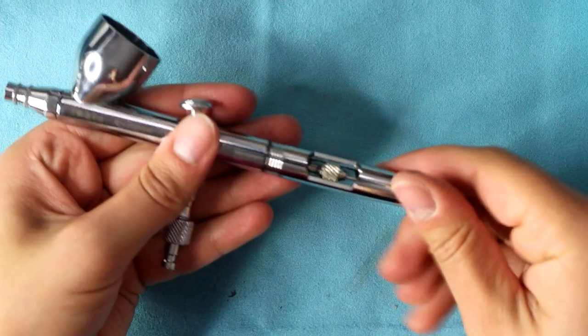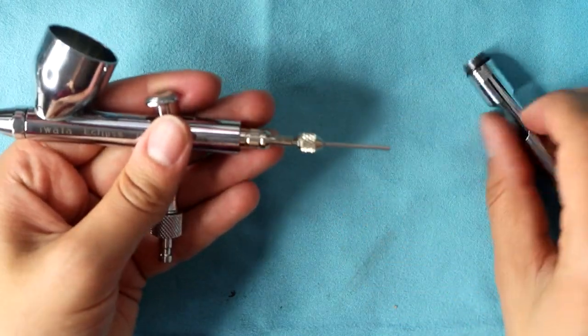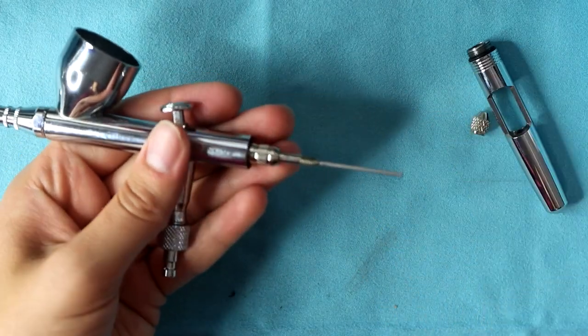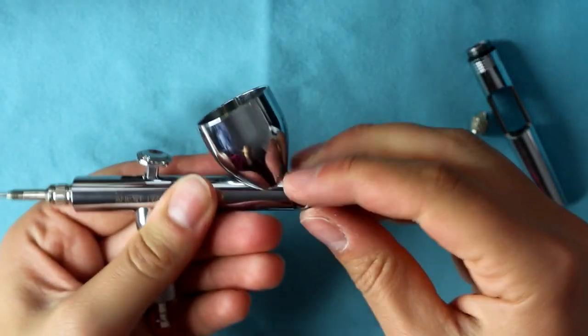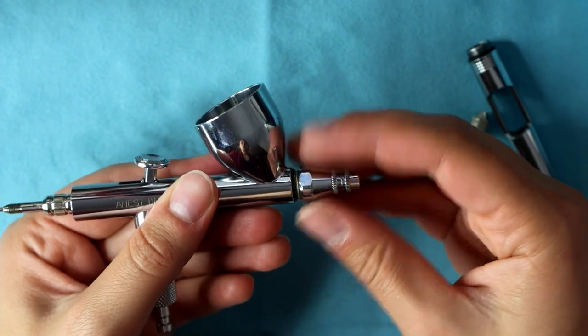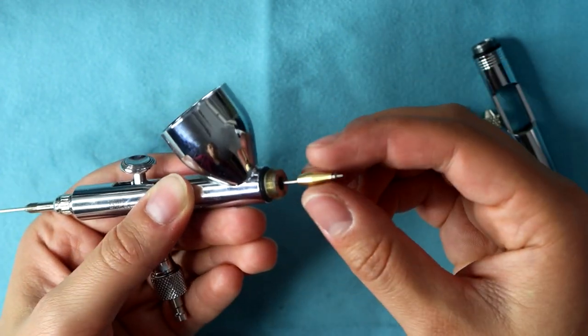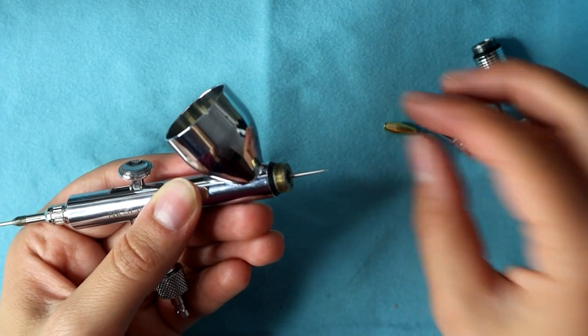So starting with the back of the airbrush, you unscrew the body, then you want to unscrew the needle nut to unscrew the head, and out will come the nozzle with the small nozzle attachment. And you want to pull the needle through the front of the airbrush, so that you don't drag paint residue through the body of the airbrush.